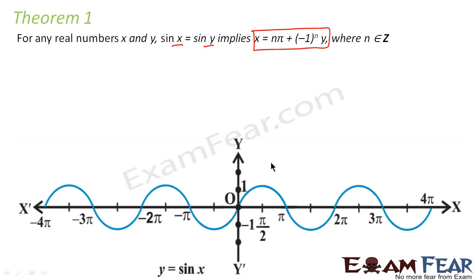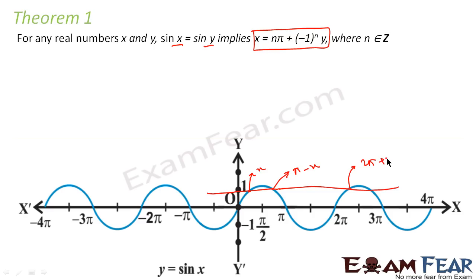We can prove this using a graph. If we draw a horizontal line at a given value, we see that the sine function takes the same value at x, at pi minus x, and at 2π plus x. Here, when n equals 1, the sign changes, so it's minus 1 to the power n. When n equals 2, it is positive. So the common formula is n·pi plus minus 1 to the power n, times y.